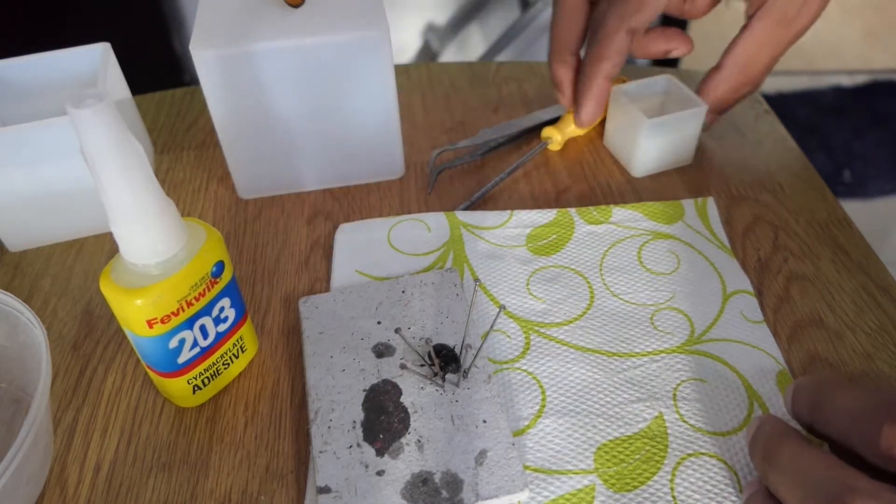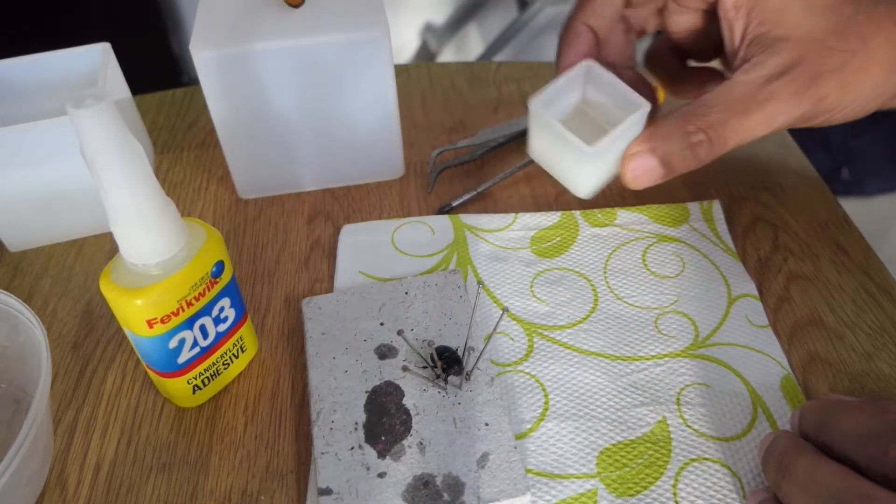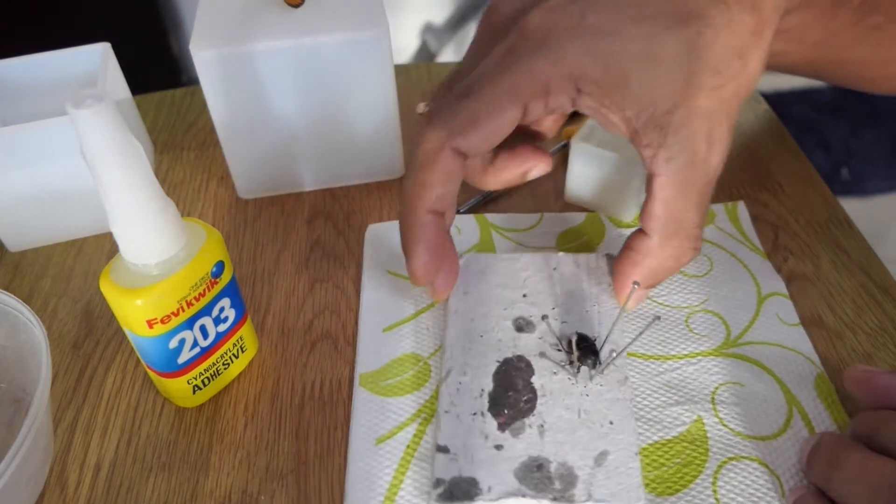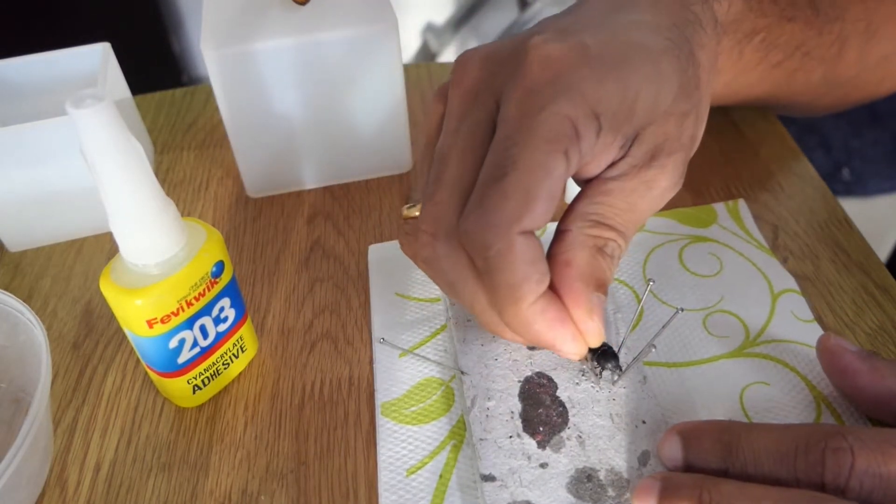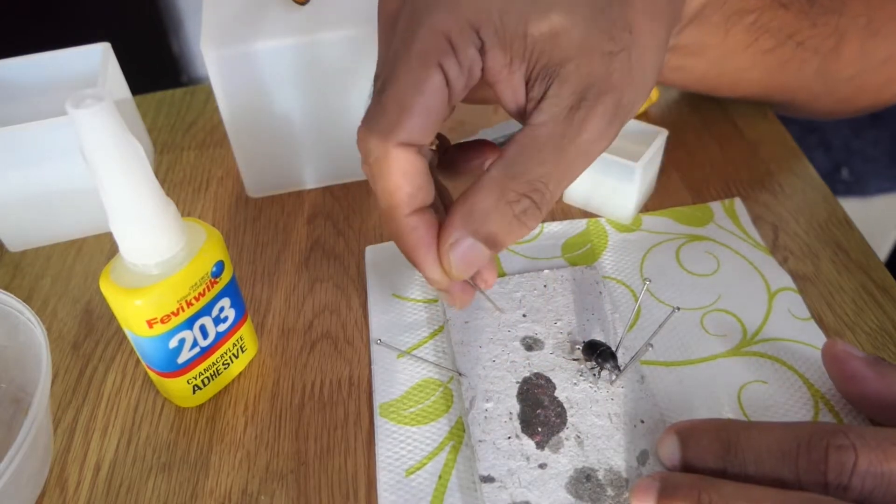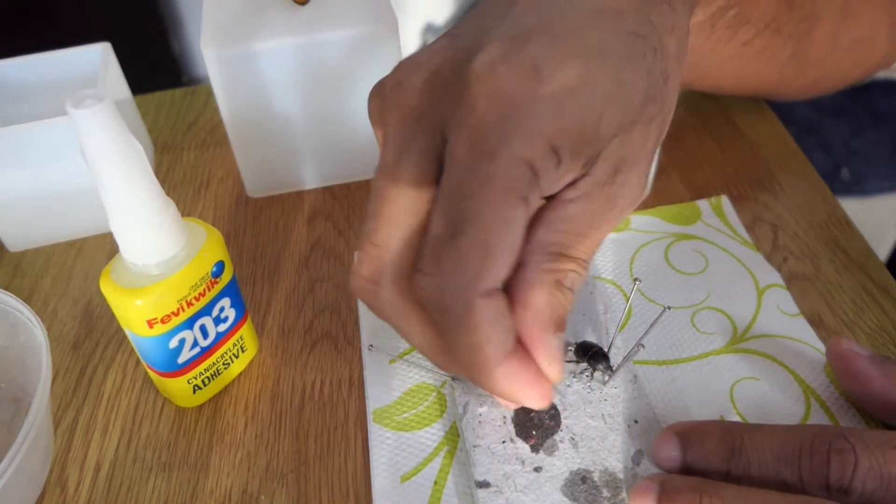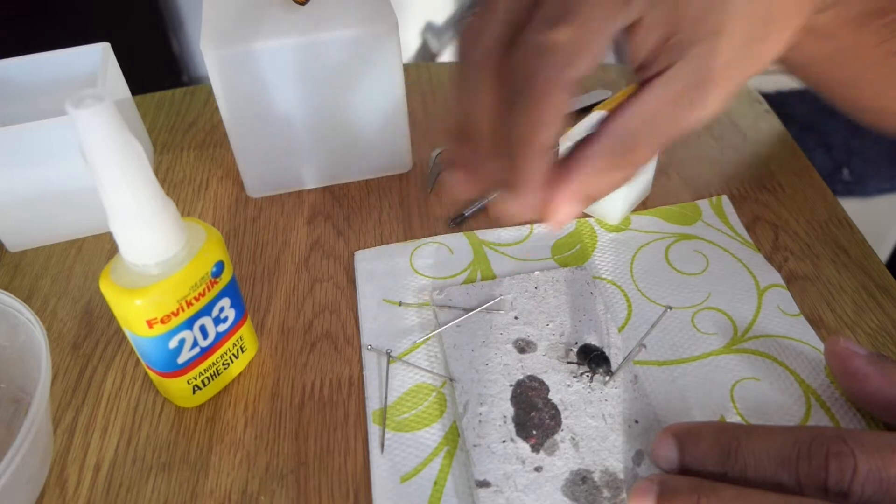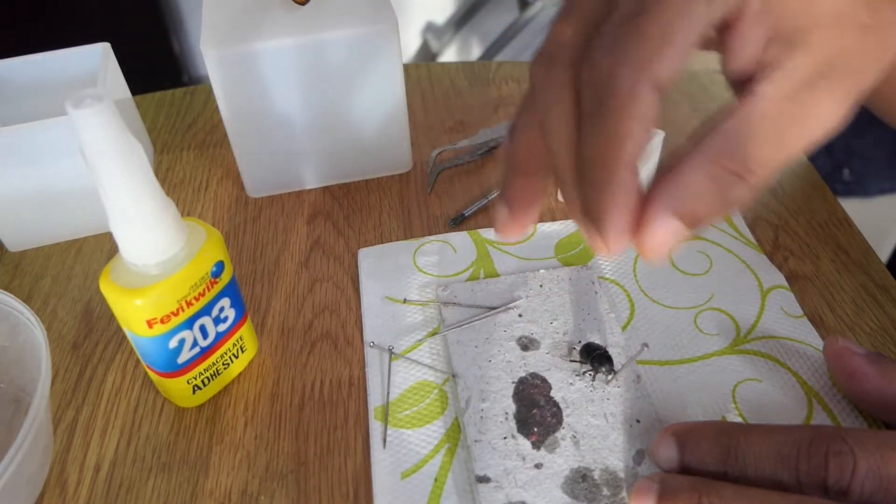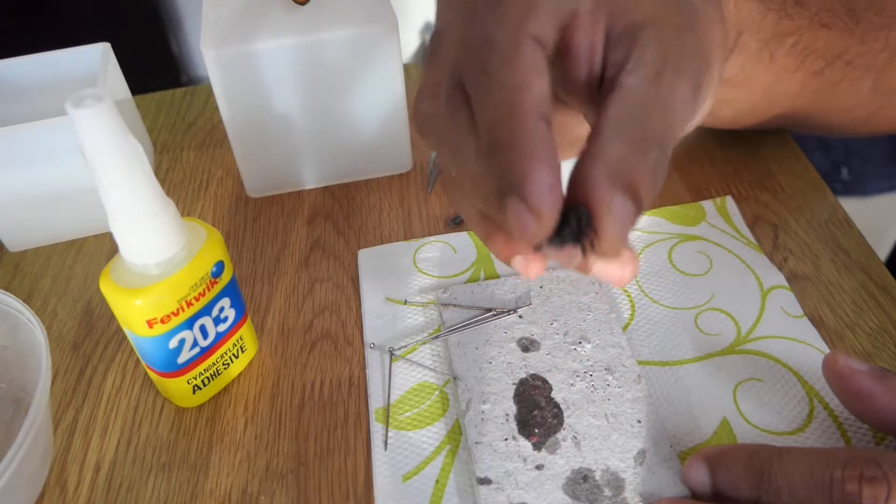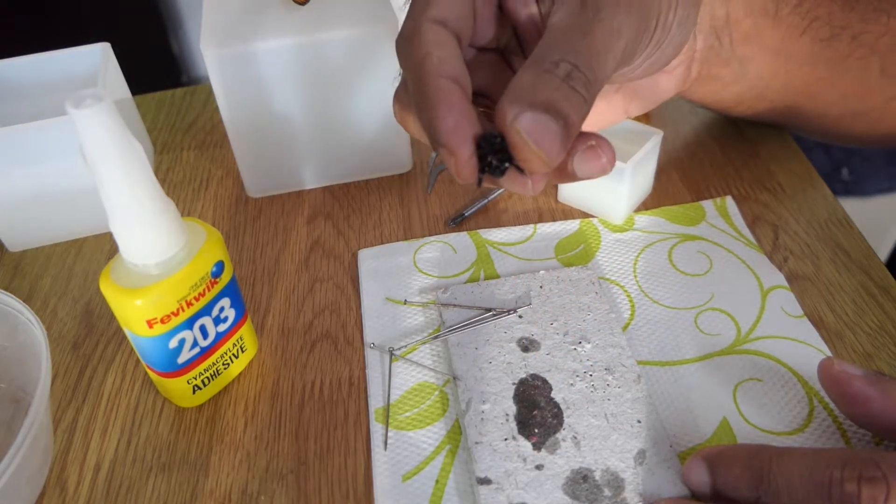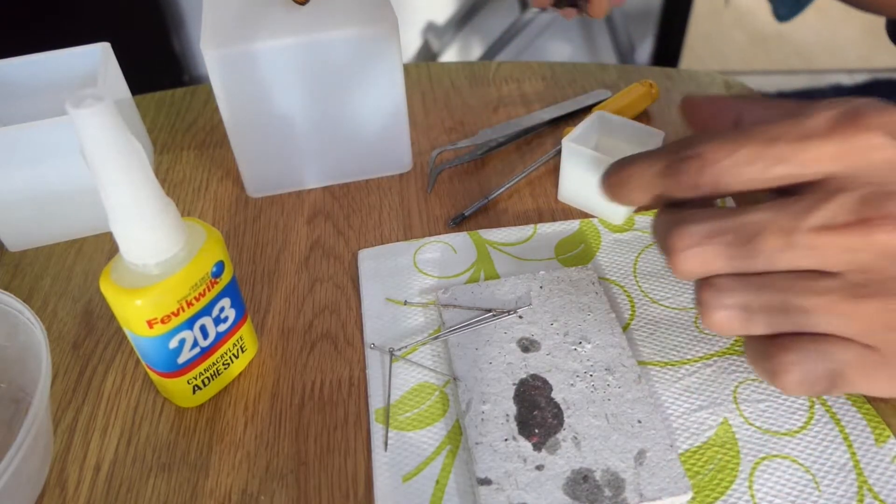I have here a dung beetle that I've mounted, and I want to embed it within resin. I've moisturized the beetle and spread out its legs and pinned it so that it assumes a more lifelike position. Now it's ready to be cast within resin and it's looking good.